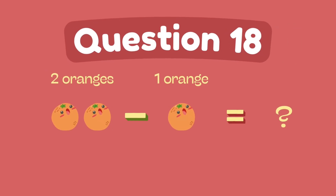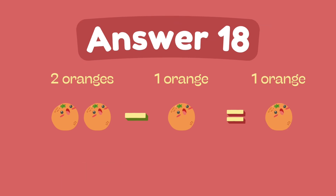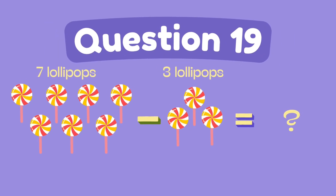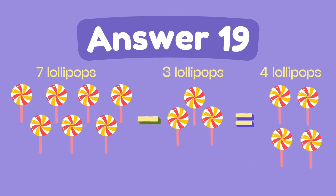What is two minus one? What is seven minus three? The answer is one. What is seven minus three? The answer is four.